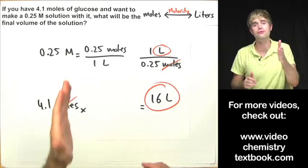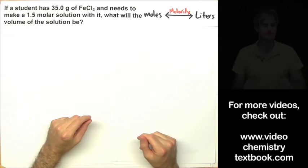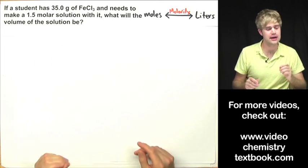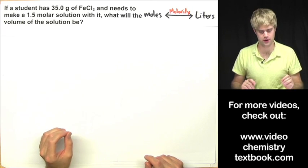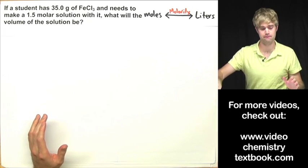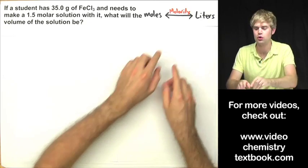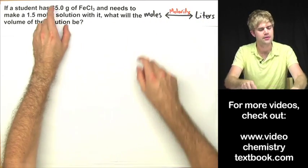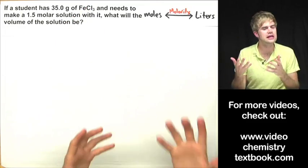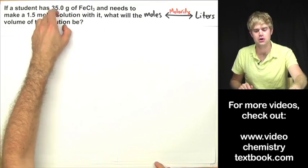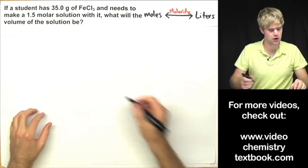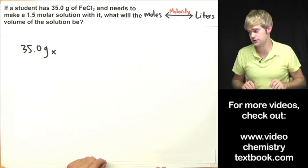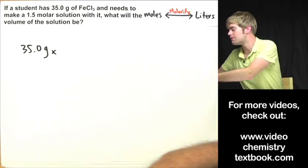Now we're going to do some problems where we have to do a few more steps with additional unit conversions. If a student has 35.0 grams of FeCl₃ — iron chloride — and needs to make a 1.5 molar solution with it, what will the volume of the solution be? In this problem we're looking for volume in liters. Molarity lets us convert between moles and liters, but the amount of iron chloride here isn't given in moles — it's given in grams. So before we can use molarity as a conversion factor to get liters, first we've got to convert 35.0 grams to moles using the molar mass.